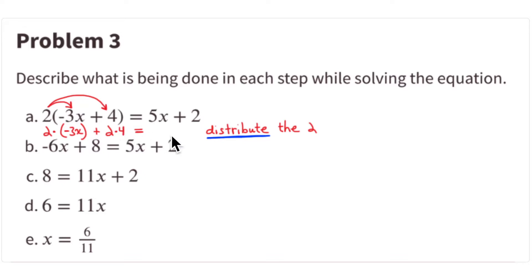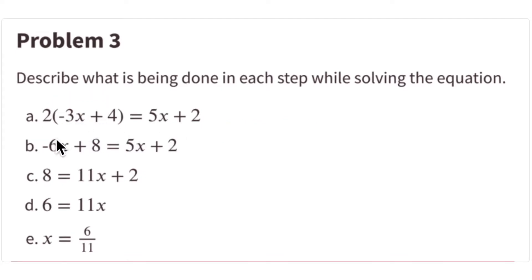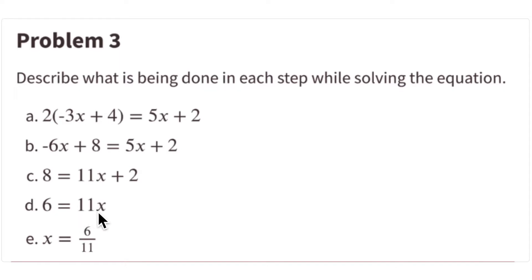Once you get rid of the parentheses, it's a matter of moving terms around using the additive inverse — getting all the x's on one side and numbers on the other. Once you're down to just a variable with a coefficient, you multiply by the multiplicative inverse. Here that coefficient is 11, so you look at 1/11 of 11x, and 1/11 of 6, which is 6/11.